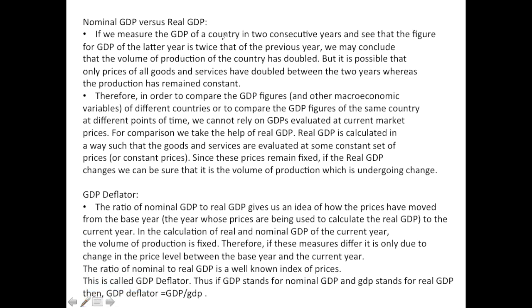If we measure the GDP of a country in two consecutive years, we see that the figure of GDP for the latter year is twice that of the previous year. For example, the GDP of year 1 is 100, and the GDP of year 2 is 200. We can say that the GDP has doubled in this time period through Nominal GDP.